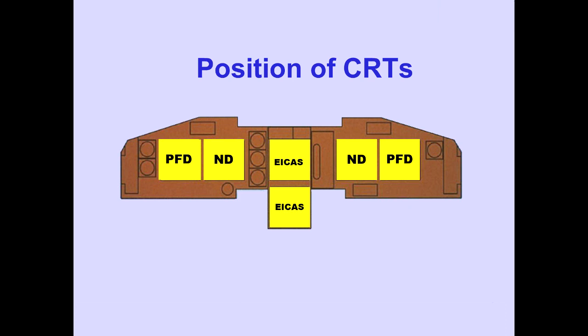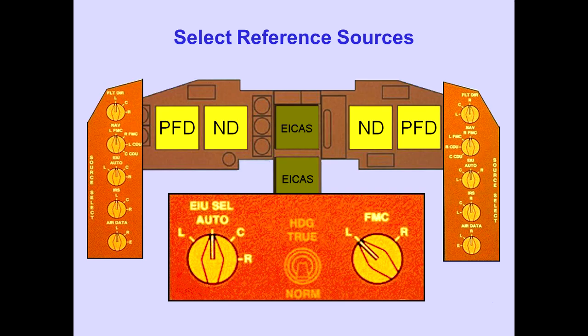The location of a display can be changed to accommodate a CRT malfunction. Numerous source selectors allow pilots to select the various reference sources.